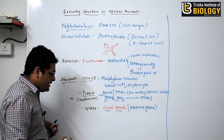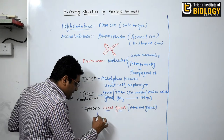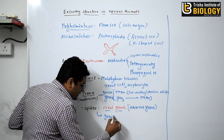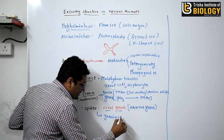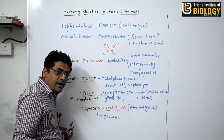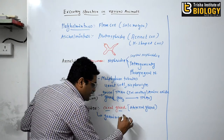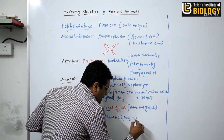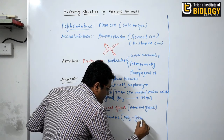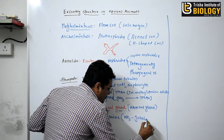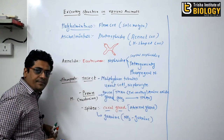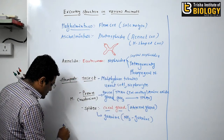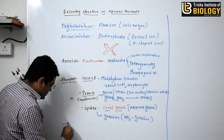Spider has the coxal gland for excretion. The coxal gland is also known as the antennal gland. Spiders excrete guanine, which is also formed from ammonia.